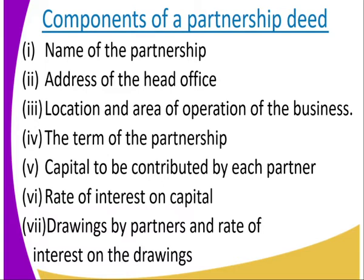This partnership deed contains: number one, the name of the partnership — what name have they given it; number two, the address of the main office — if they have decided the office is in a certain area, it must have the address of the business, not of an individual; number three, the location and area of operation of the business must be stated in the partnership deed.